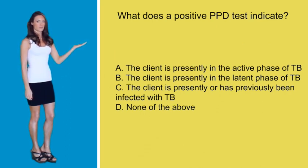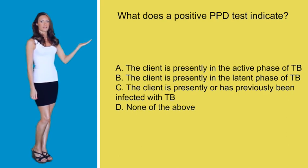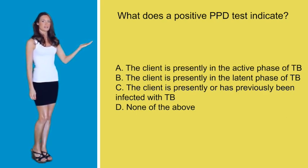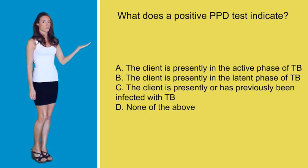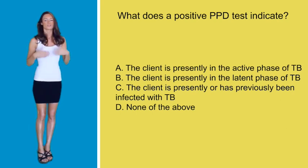B — that the client is presently in the latent phase of tuberculosis. C — that the client is presently or has previously been infected with tuberculosis. Or D — none of the above. This question is actually pretty simple to answer as long as you know the key concept.